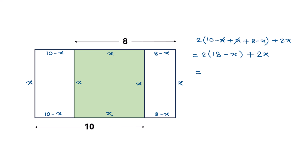If we multiply 18 minus x by 2, we get 36 minus 2x. Adding the 2x term, the negative 2x and positive 2x cancel. So the perimeter of this large rectangle is 36 units. If you like this video please subscribe to my channel, thanks for watching.